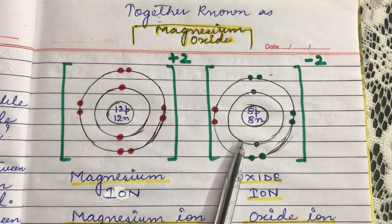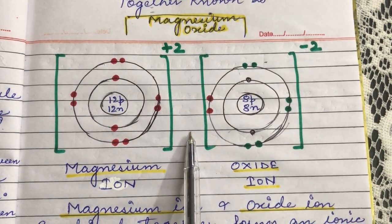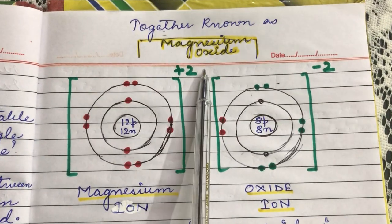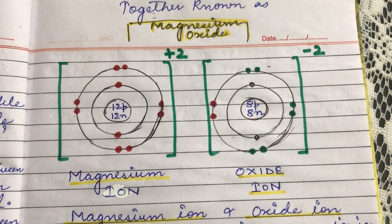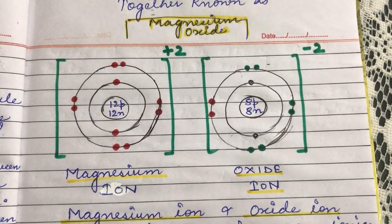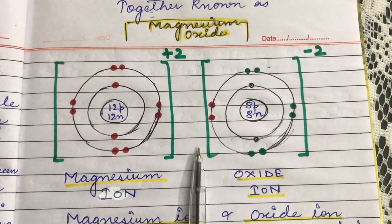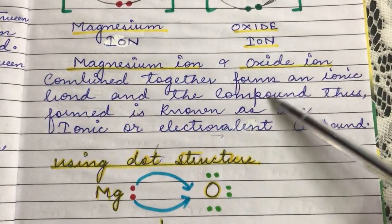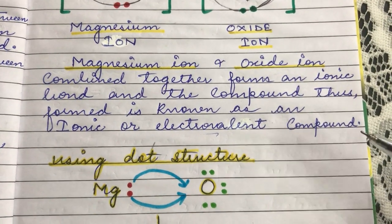Since they have bonded together, they will stay together — they have an ionic bond between them. They form the compound magnesium oxide and will not remain as separate ions. Ions do not exist as individual separate ions; they are always bonded to another ion. The magnesium ion and oxide ion combine to form an ionic bond, and the compound thus formed is known as an ionic or electrovalent compound.